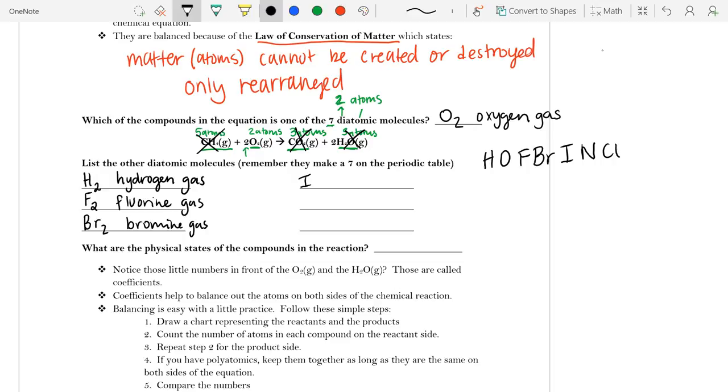Now, if you look on your periodic table, you'll notice that a majority of these gases are in your halogen family. And that's going to be true of them.